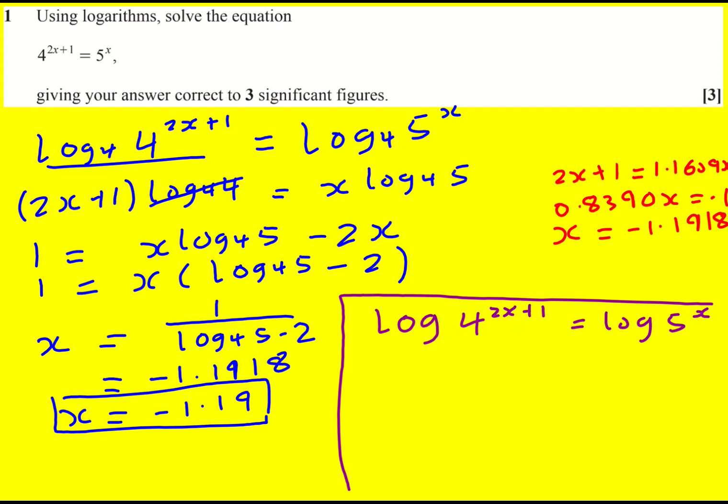Now I bring down that 2x plus 1 and the x, expand it out. So 2x log 4. You can see it's a little bit more complicated because of the base I end up with logs on both sides.